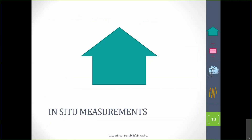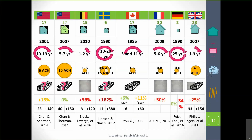Let's start with the results of field measurements of durability of airtightness in the literature. Here is, in just one slide, a summary of all the studies we found in 2016 when we did this review. In the table, you have the country of the study, the number of houses for which the durability was tested — in blue, new houses; in green, refurbished houses — the year of construction, how long after they were retested for airtightness, the level of airtightness, the kind of construction, and the average variation of airtightness with the minimum and maximum.